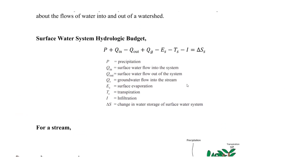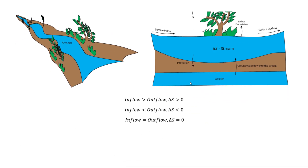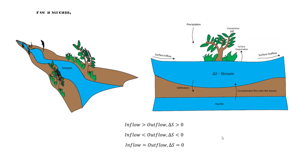Using this equation for a stream as given in the FE exam reference book: if inflow is greater than outflow, the change in storage increases. If inflow is less than outflow, the change in storage decreases. If inflow equals outflow, you have equilibrium and the change in storage does not change. That covers the water balance basics — I hope this helps you study for your FE exam and your water resources or hydrology class.